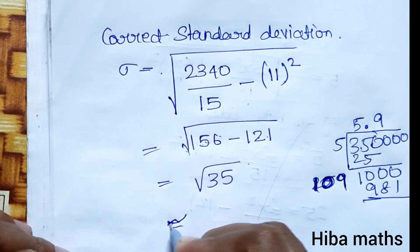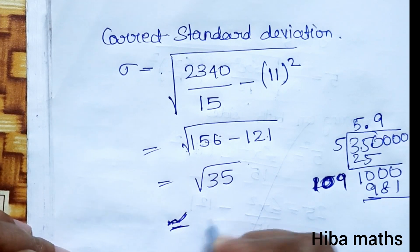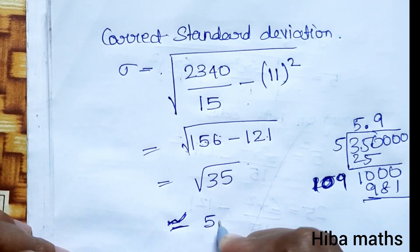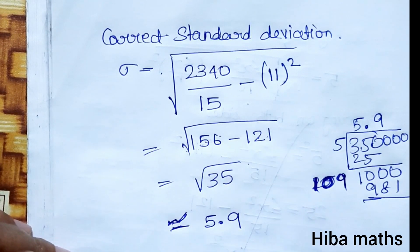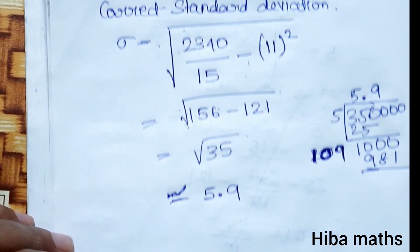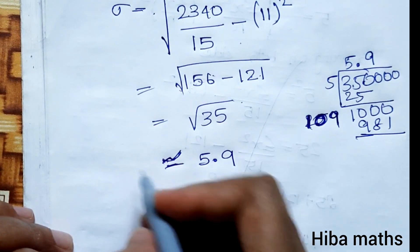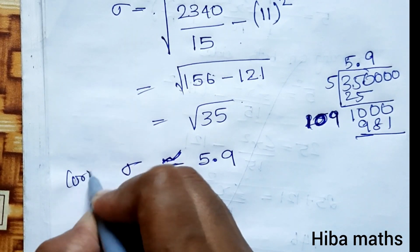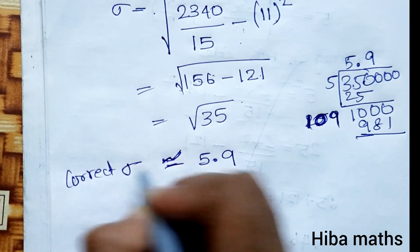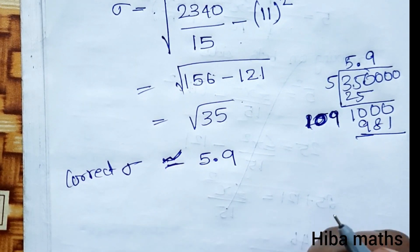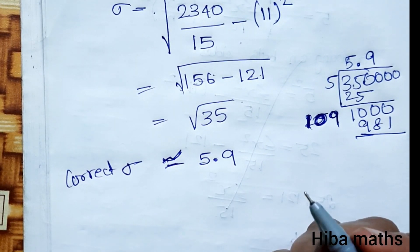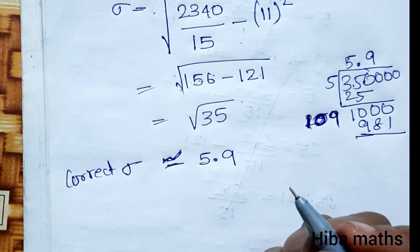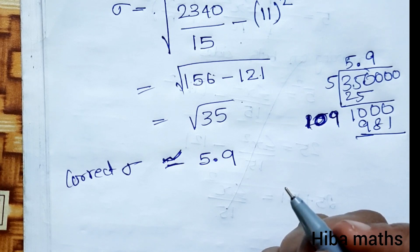So 5.9 is the correct standard deviation. Therefore, the correct mean is 11 and the correct standard deviation is approximately 5.9. Please leave any doubts in the comment section.